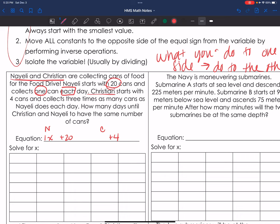Christian starts with four. So I know his constant is four. And then collects three times as many cans as Nayeli does each day. Starts with four and collects three times as many as Nayeli. So three x. Three times as many as she does. She only does one a day. So he does three times that much a day. How many days until Christian and Nayeli have the same amount? So same amount means equals, same number, right? Okay, cool. There's my equation.